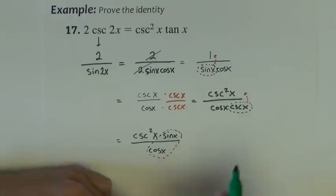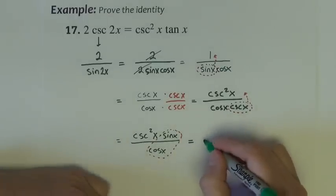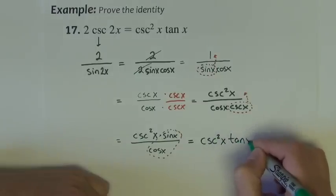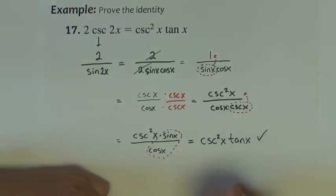Look here, we have sine divided by cosine. And sine divided by cosine is our good friend, tangent. So we have cosecant squared x, tangent x, and that's proven.